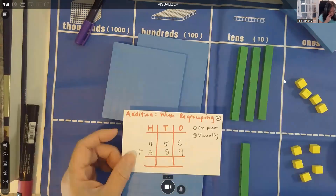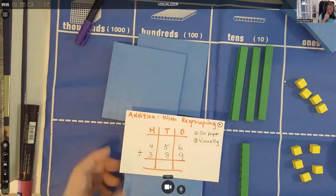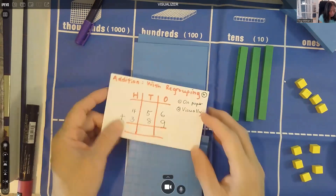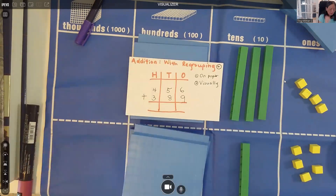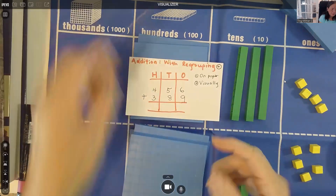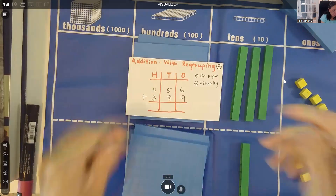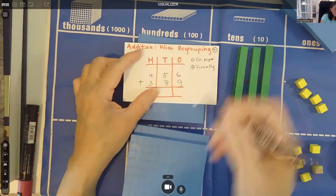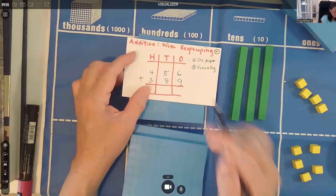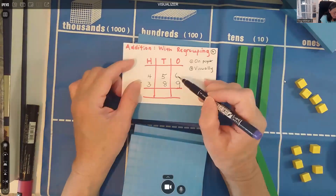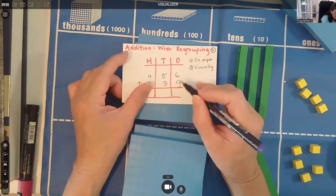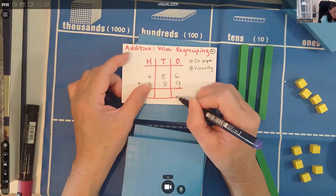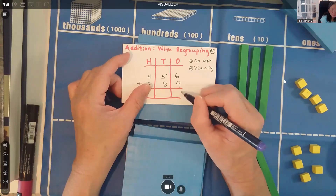Now we're going to add with regrouping. On paper: six plus nine is 15. I can't write 15 in the ones column, so I write 5 and carry the 1 — representing one ten — over to the tens column.